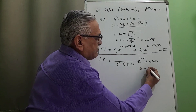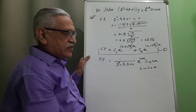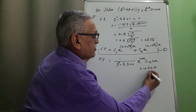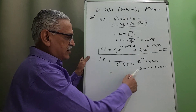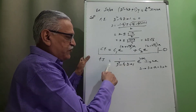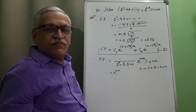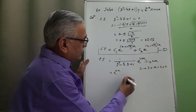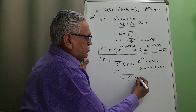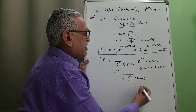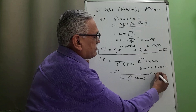The rule is to replace D by D plus a, where a is the coefficient of x in the exponential term. Therefore we replace D by D plus 2. The next step becomes: we take e raised to 2x before the operator, and it is e raised to 2x times one over (D plus 2) squared minus 4 times (D plus 2) plus 1, operating on V, where V is sine 2x.